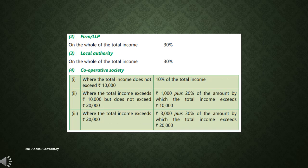In case of a firm or LLP, on their total income, the tax levied is 30%. For a local authority, on the total income of the local authority, the tax rate is also 30%. For a cooperative society: where total income does not exceed ₹10,000, the tax rate is 10%; when total income is between ₹10,000 and ₹20,000, the tax rate is 20%; and when total income of a cooperative society exceeds ₹20,000, the tax rate is 30%.